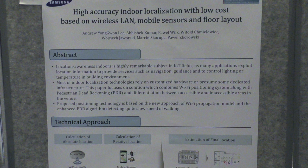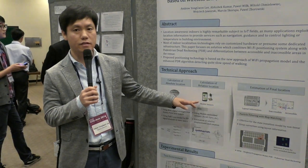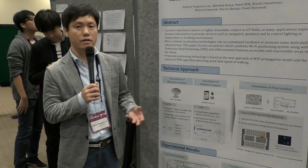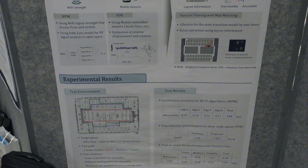We use the Wi-Fi access points to calculate the absolute location of the user, and additionally we use smartphone sensors like the accelerometer and gyroscope. We then mix that information with a particle filter to finally estimate the user location in a building.